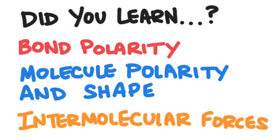So did you learn everything in this video? You learned that atoms share electrons in a covalent bond, however sometimes the electrons are not shared evenly. When an atom with a high electronegativity shares electrons with an atom that has a low electronegativity, a polar bond is formed. The shape of a molecule contributes to its polarity — in general, symmetrical molecules are not polar. Intermolecular forces are attractive forces between molecules, and there are three major types: London dispersion forces are the weakest, dipole forces are stronger, and hydrogen bonding is the strongest intermolecular force.